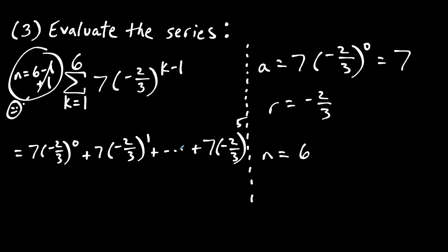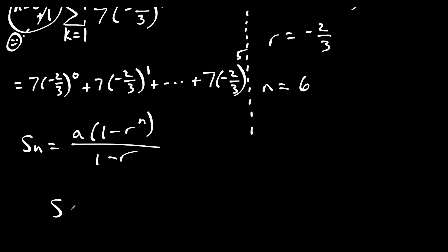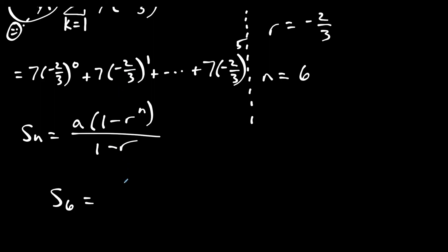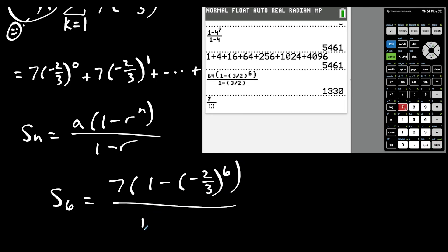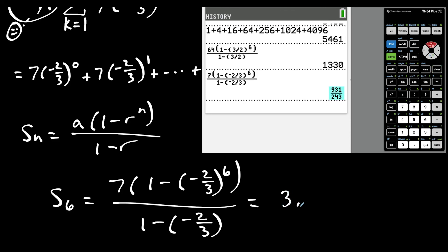Using the formula S sub n equals a times 1 minus r to the n over 1 minus r, the sum of the first 6 terms equals 7 times 1 minus negative 2 thirds to the 6th power, divided by 1 minus negative 2 thirds. Be careful — the minus of a negative changes to a plus in the denominator. Typing this into a calculator and rounding to the nearest hundredths place gives approximately 3.83.